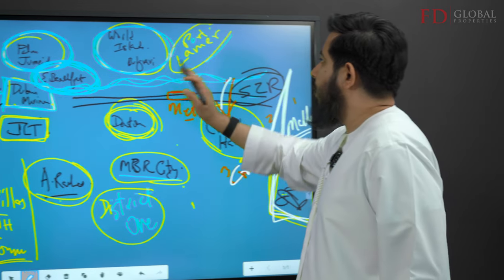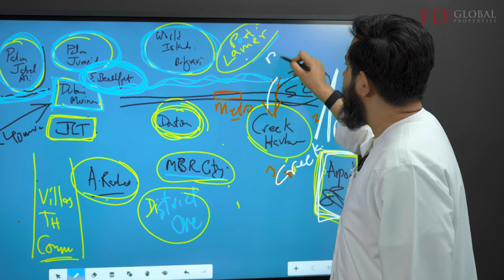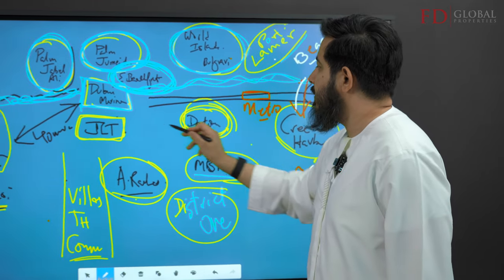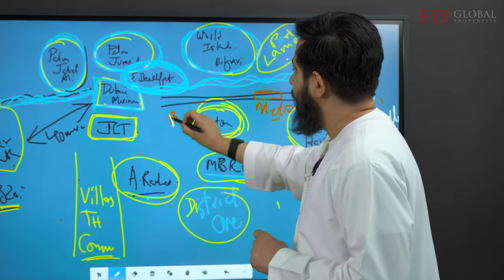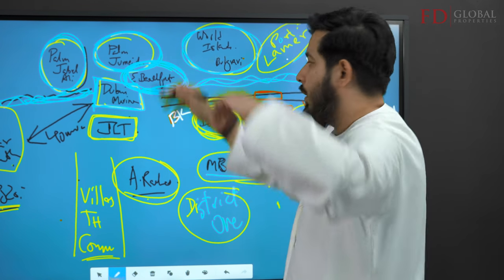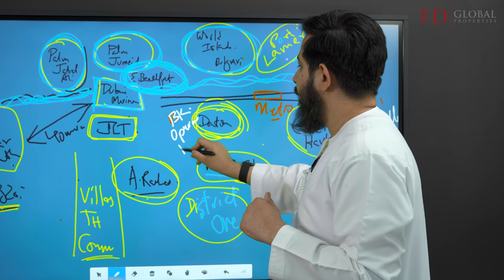When you come further down, Port de la Mer, World Islands, it's got the beach and water views. Downtown has four main landmarks which are Burj Khalifa, which is the tallest tower in the world. It's got the Opera House, it's got the fountains.